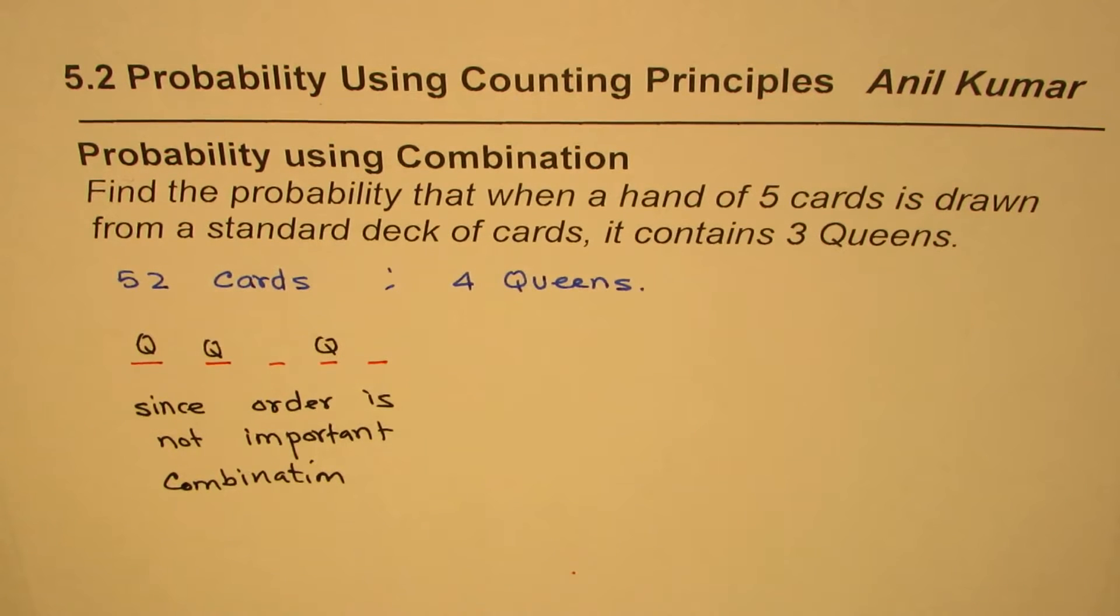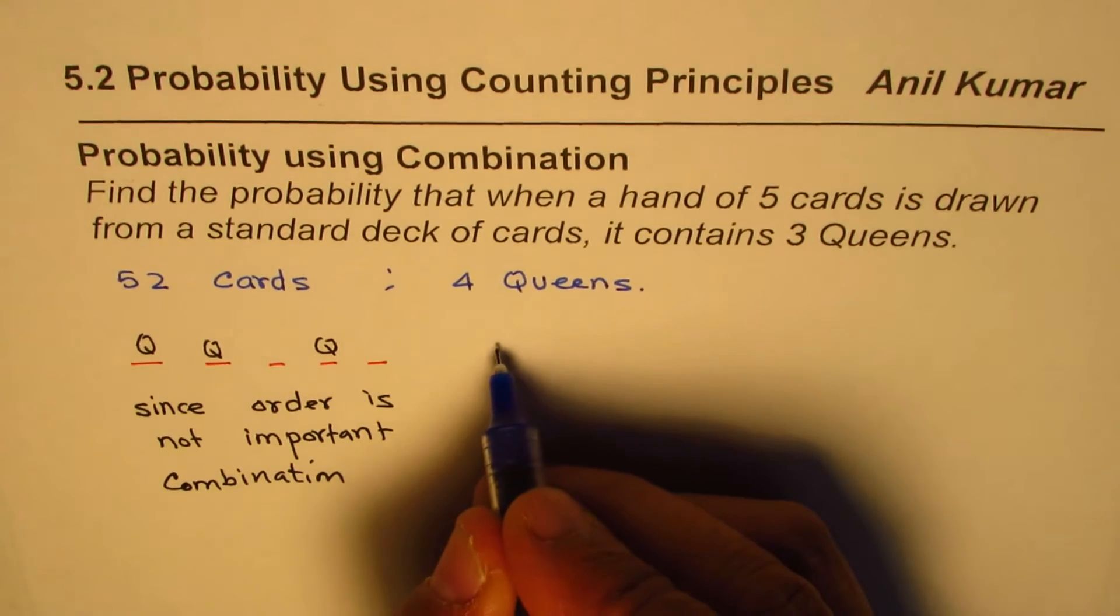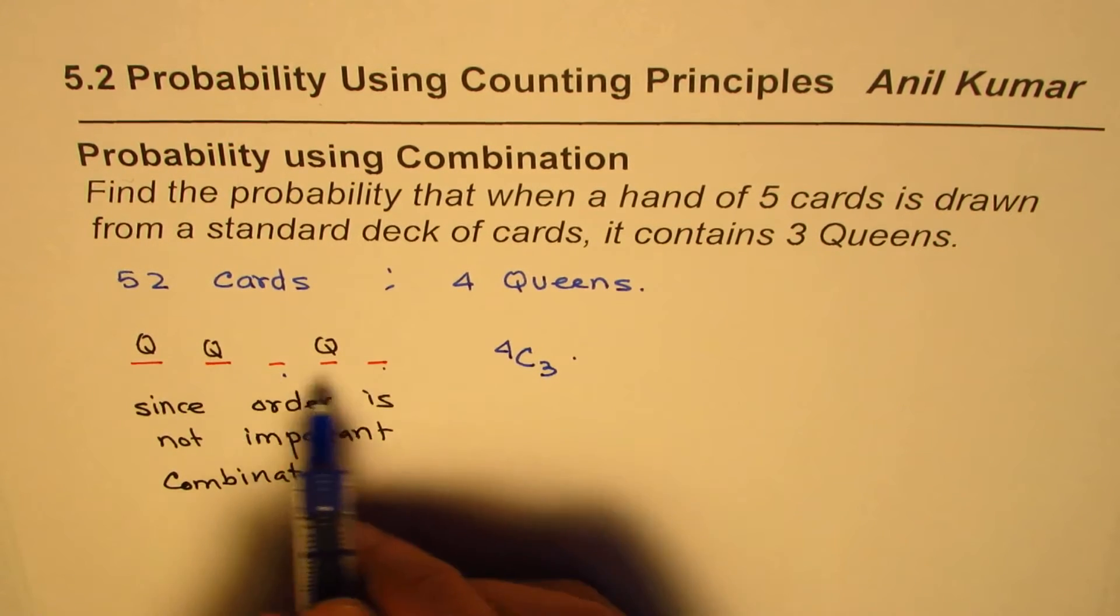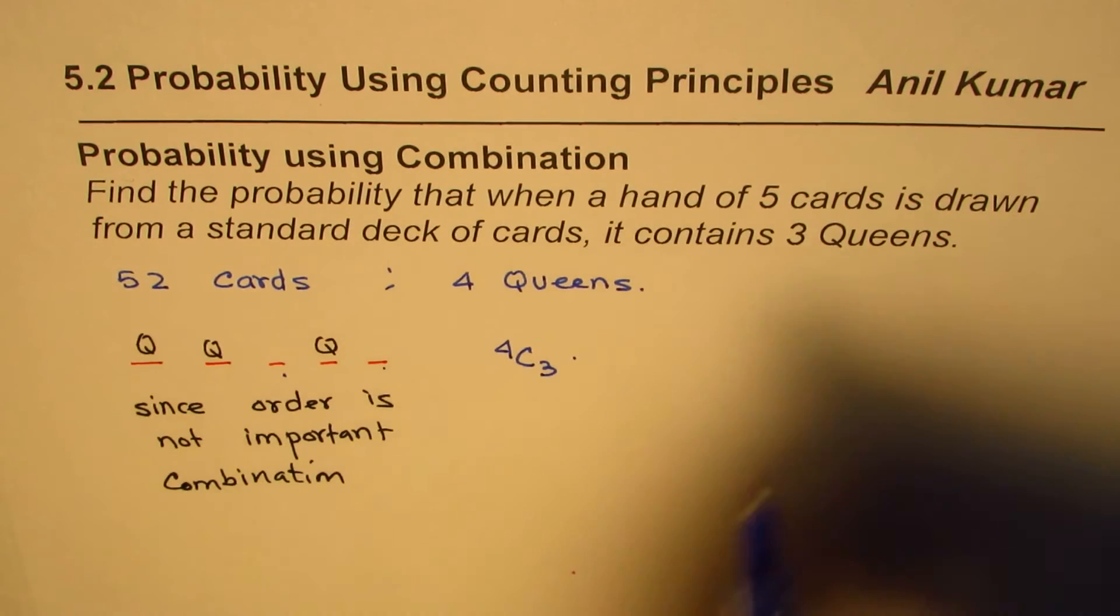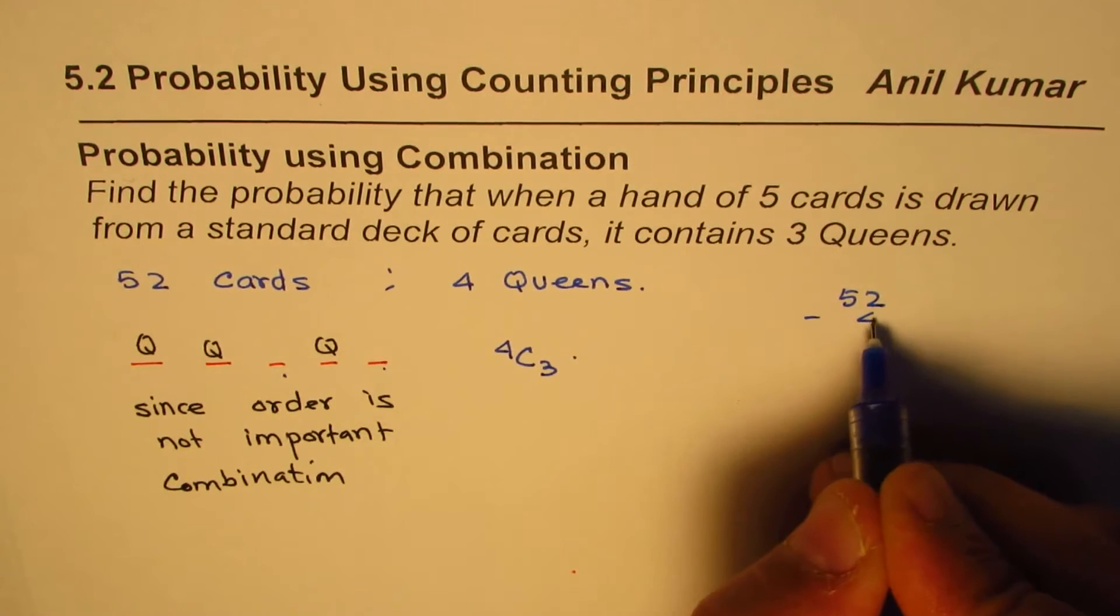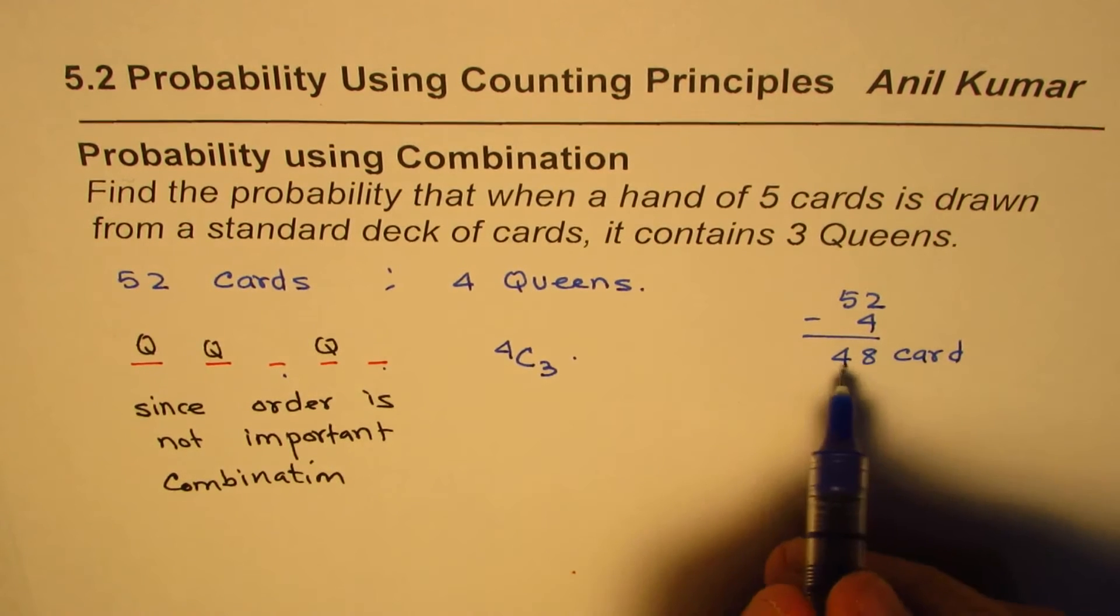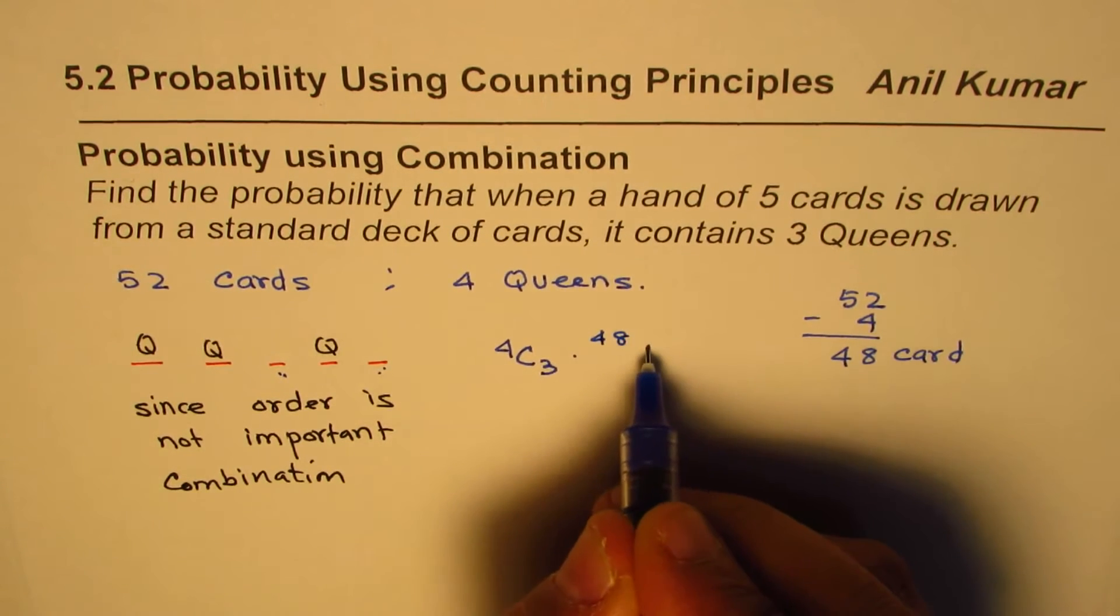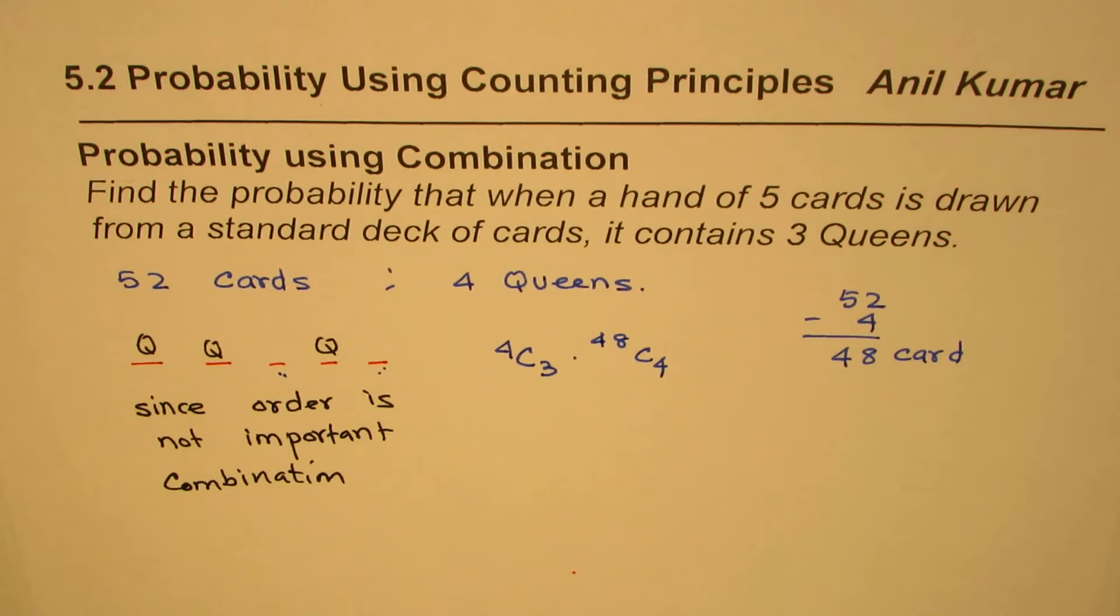If we have to draw a hand of 5 cards, we take 3 queens out of 4, so what is the combination? Out of 4 we are selecting 3 queens - that's 4C3. These 2 places have to be filled from the other cards - 52 take away 4. We cannot take the fourth queen, so that means 48 cards which remain. Out of 48 we have to select 2 cards to fill up these spaces, so we have 48C4. That becomes the total number of combinations for selecting 3 queens.